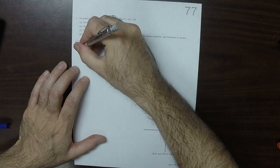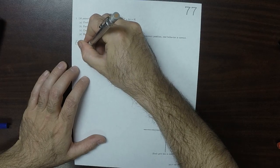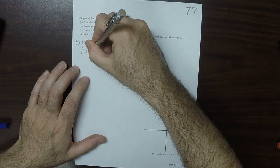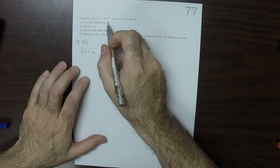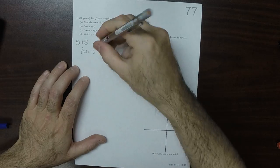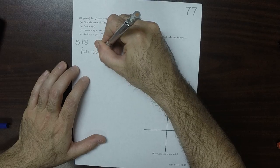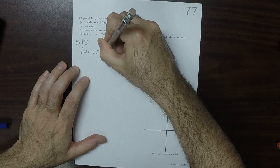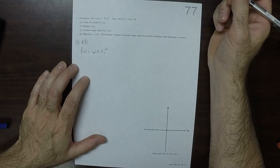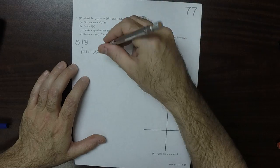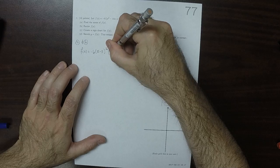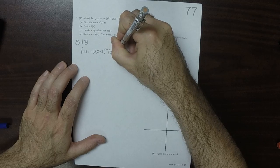We'll factor this. So this is f of x equals negative 6, and then that first quadratic factors as x minus 5 squared, and then that second quadratic factors as x plus 3 squared.